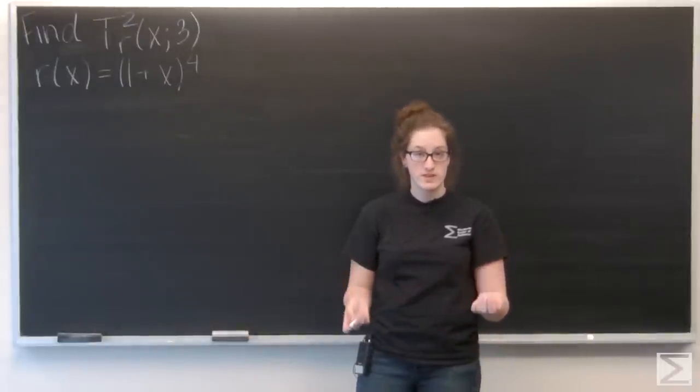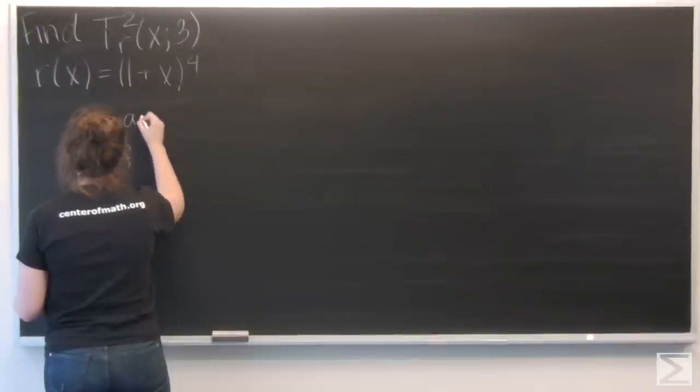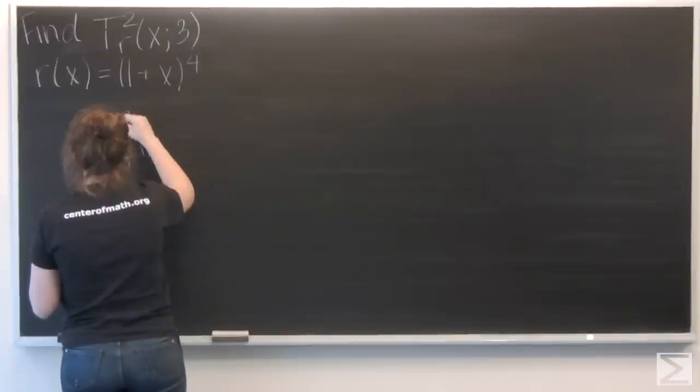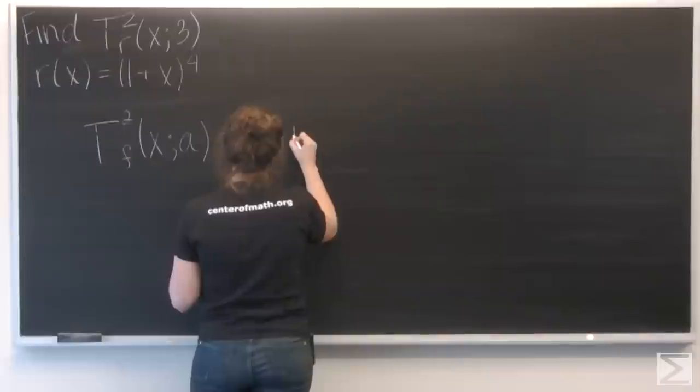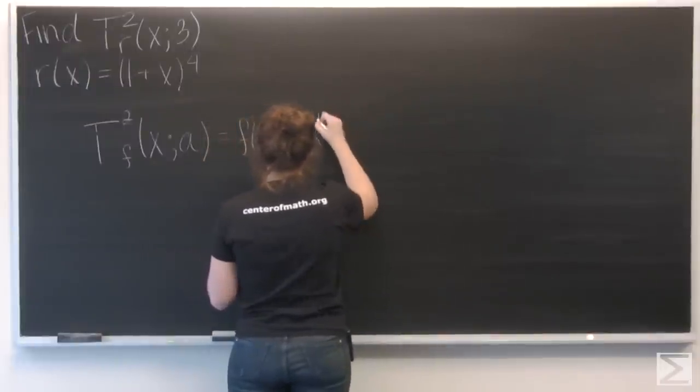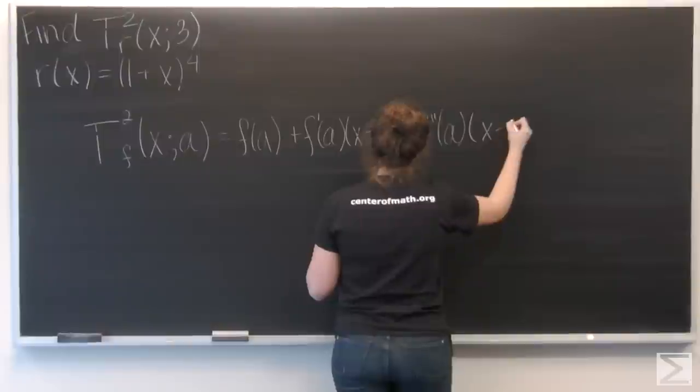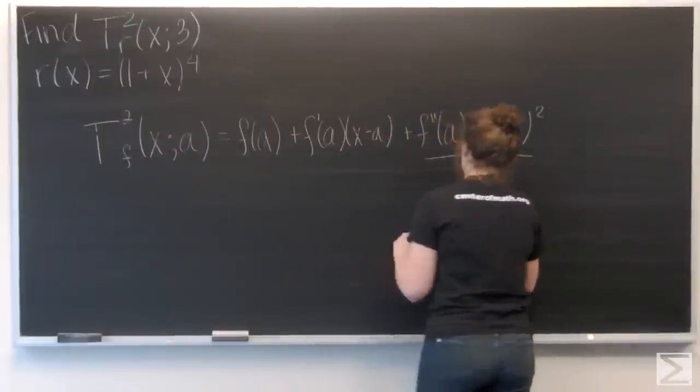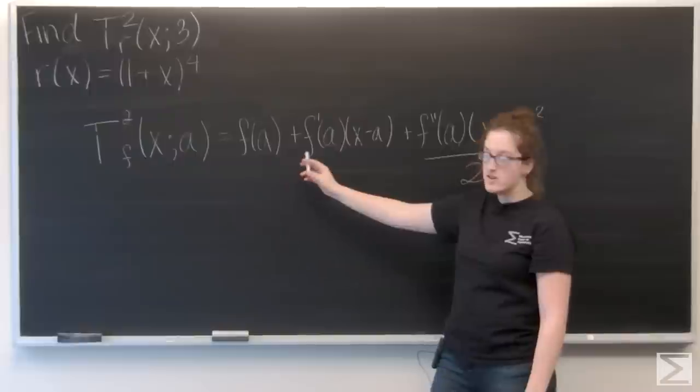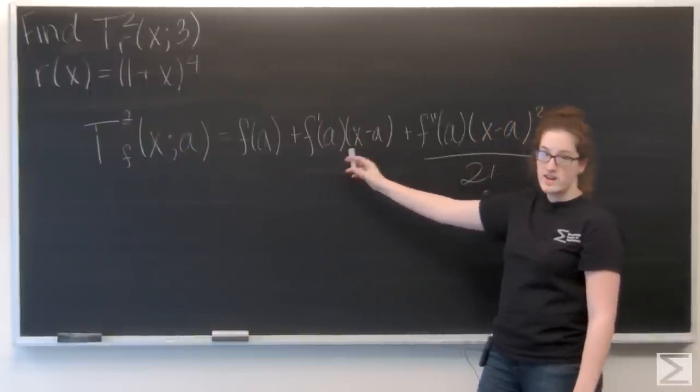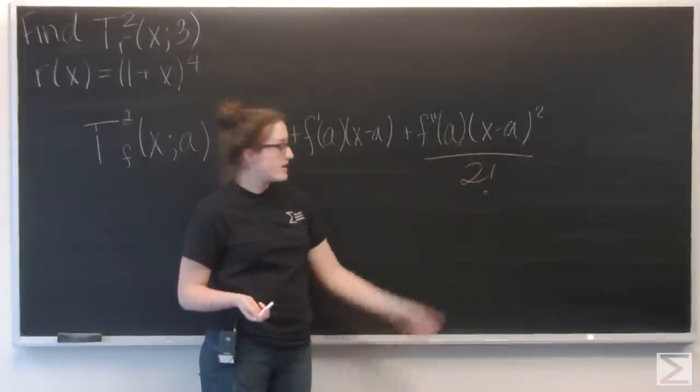So let's recall the general formula for a Taylor series. Here's our general formula for a second order Taylor series: I have my function value at a, plus the derivative of the function at a times (x-a), plus the second derivative of the function at a times (x-a) squared over 2 factorial.